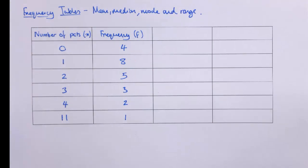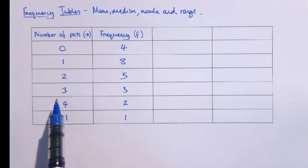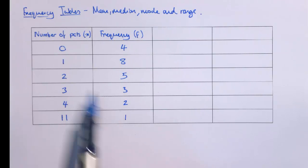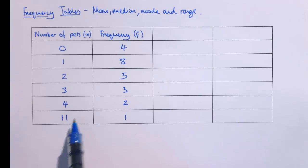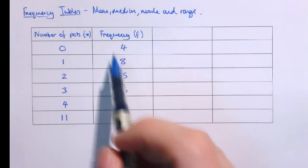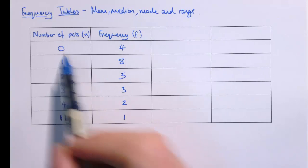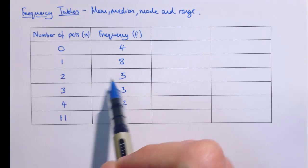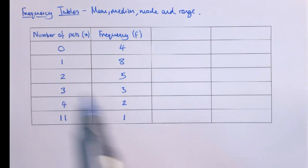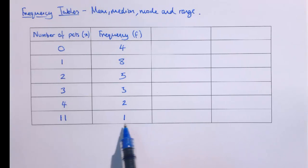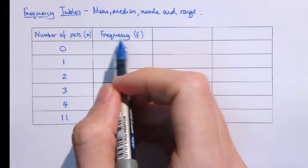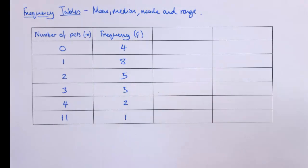It's really important to understand what each of these columns means. This column is the number of pets each person had, and this is how many people had that many pets. So there were 4 people that had 0 pets, 8 that had 1 pet, 5 that had 2 pets, 3 had 3 pets, 2 had 4 pets, and 1 person had 11 pets. And that's what we mean by the frequencies — how many people there are in our list with that value.